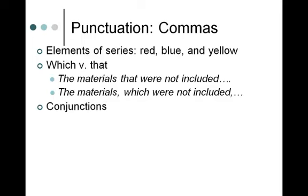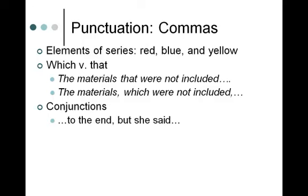With conjunctions, put a comma before the conjunction when you have two independent clauses. People sometimes forget this when 'but' is the conjunction being used. If you have two independent clauses separated by a conjunction, you need a comma. If the two clauses aren't both independent, you may not need a comma. But if each part could stand on its own as a complete sentence, you do need the comma.